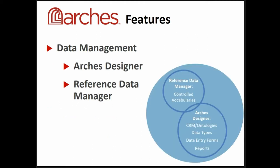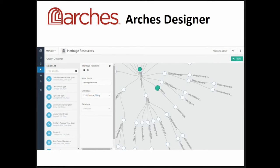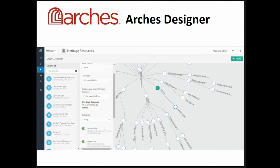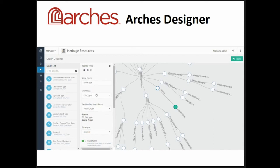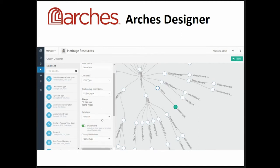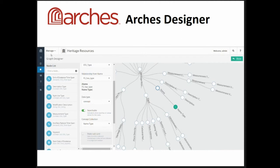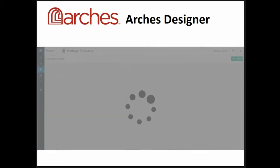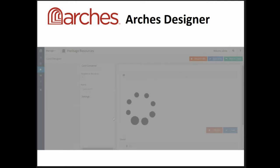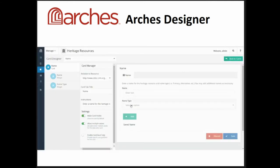Moving on to data management: the two most significant things here are the Arches Designer and the Reference Data Manager. The Arches Designer is probably the most significant thing that had to happen to Arches in version 4. It allows you to define the resource model within your Arches interface, the data entry forms, and reports. They all build upon your initial data model, and for each data node you're able to specify the ontology class — whether CRM or a combination — and the data types.